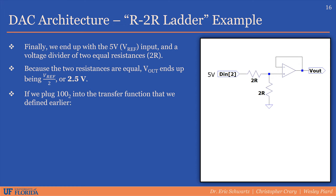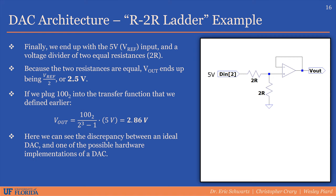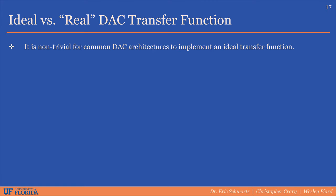However, if we plug the binary value 100 into the transfer function we defined earlier, we get approximately 2.86 volts. The discrepancy that exists here is between an ideal DAC and a more realistic, albeit simple, hardware implementation of a DAC. It's actually not very straightforward for a common DAC architecture, such as the R2R ladder we discussed, to implement a perfectly ideal transfer function. Thus, in reality, we typically define the transfer function as follows.